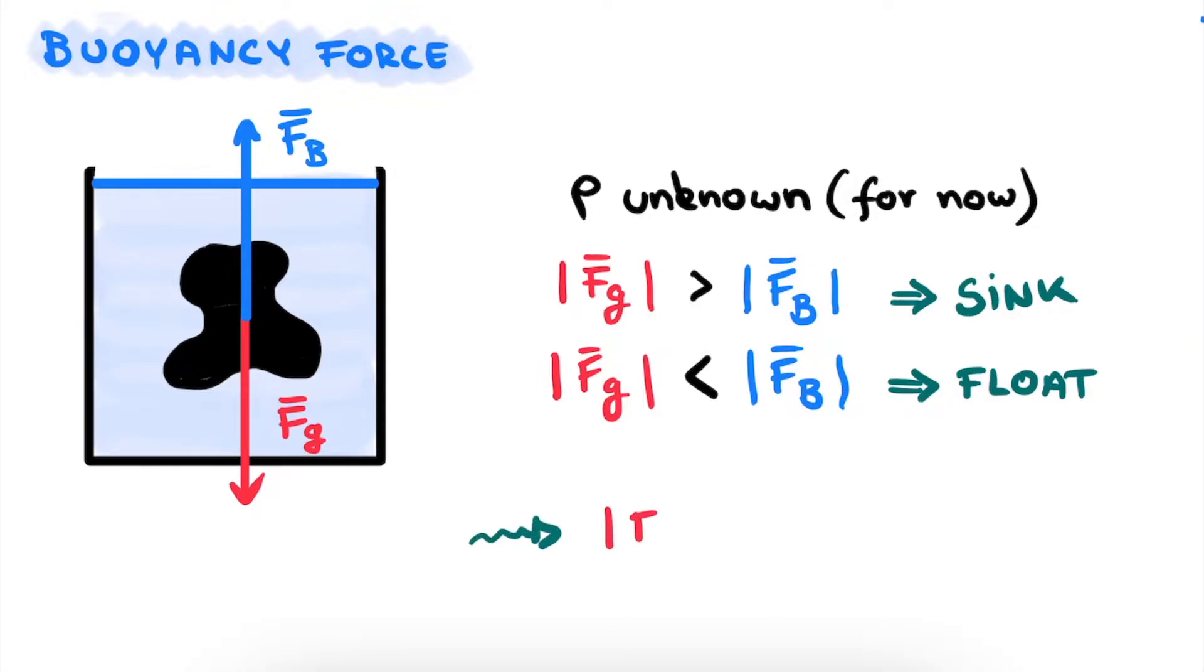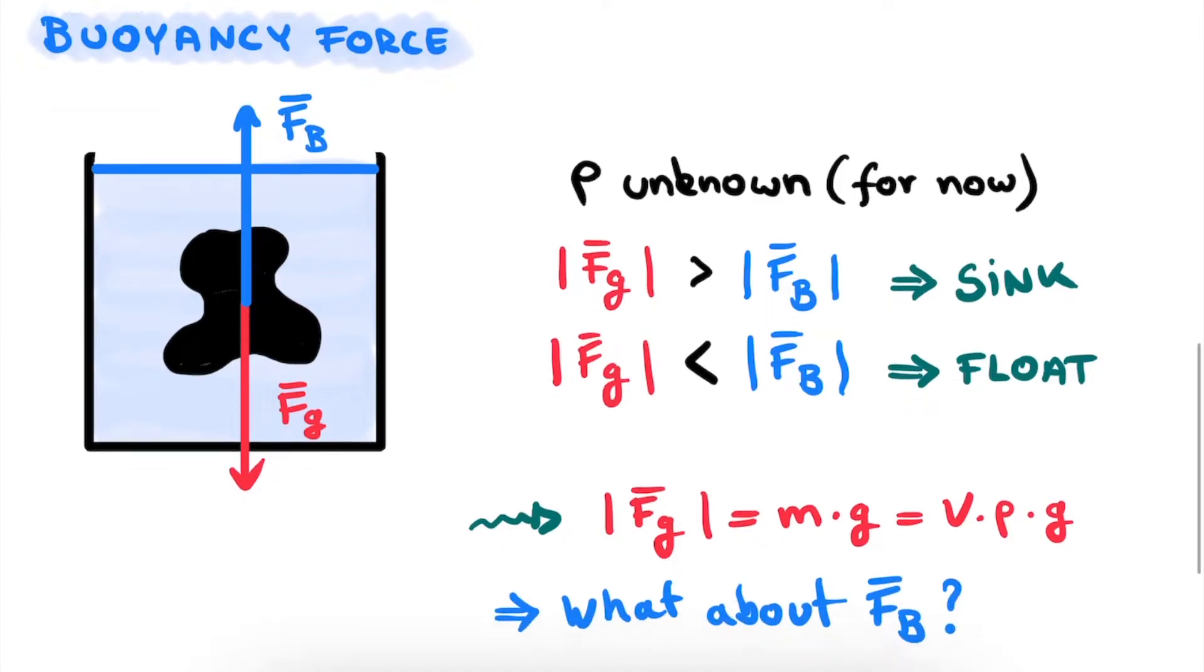For gravity, this is straightforward and we know this. Fg is simply equal to the mass of the object times the gravitational constant. And then the mass of the object can be written as its volume multiplied by its density. So one of the two we have down. But what about buoyancy? Well, let's find that out right now.